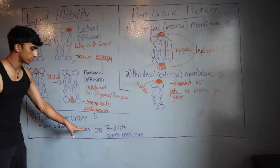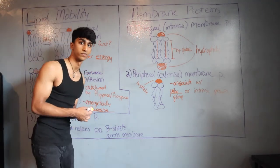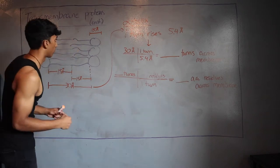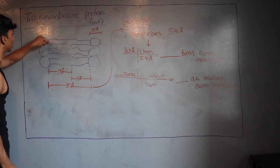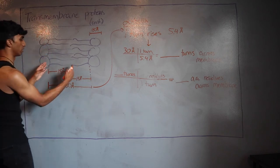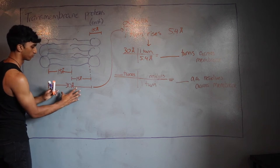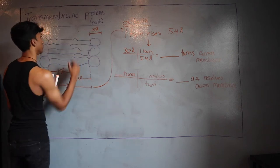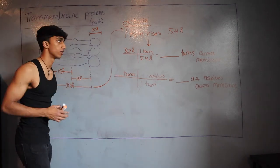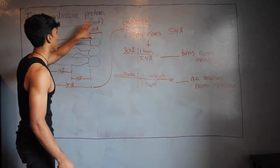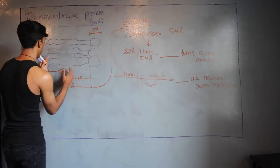For transmembrane proteins, we'll do a calculation from class. In a bilayer membrane, the head group is about 15 angstroms across, each hydrophobic fatty acid tail is 15 angstroms — so together that's 30 angstroms — and the other head group is also 15 angstroms. Transmembrane proteins can be made of alpha helices or beta sheets. Let's look at an alpha helix example spanning the 30-angstrom hydrophobic region.